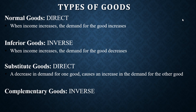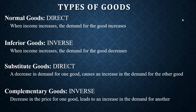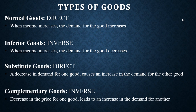We have complementary goods — goods that are used together. A decrease in the price of one good leads to an increase in the demand for the other. As the price decreases, the good becomes less expensive, and people will buy more of it. But you cannot use that good alone — you have to use it with another good, so there will be an increase in the demand for that other good.